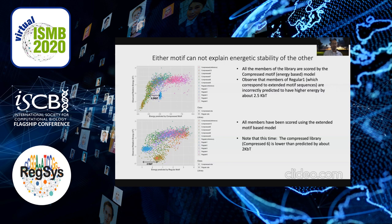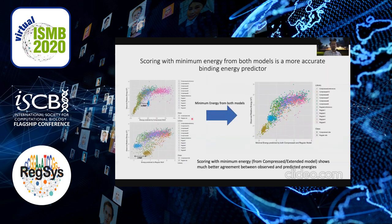If you score every sequence with the minimum energy from both energy models, you get a beautiful straight line. Both models taken together give a fairer representation of the energetics of ZNF140 binding.